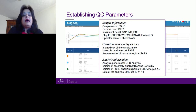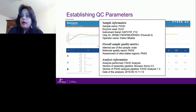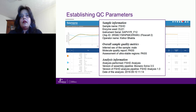When running any assay, certain QC metrics must pass. For SAFIRE, specific QC metrics need to pass and can be monitored during the run. Important QC metrics include inferred sex accuracy, molecule quality report, and assessment of ultra-stable regions — all of which must pass. We can also see what analysis was performed, what software assembly pipeline was used — in this case BioNano Solve 3.5 — which version of the FSHD analysis pipeline was used, and on which date the assay was run.